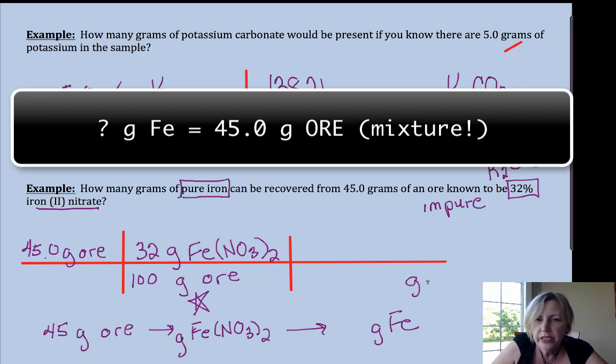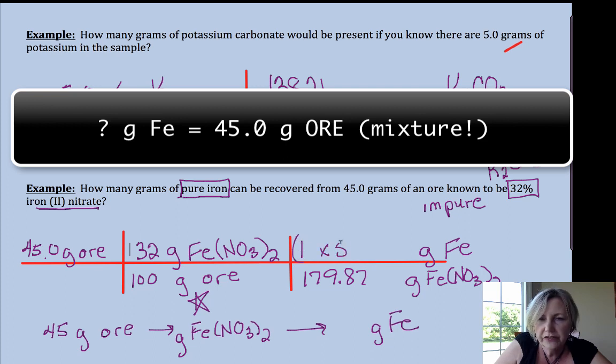Now we want to get rid of the grams of iron(II) nitrate and we want grams of iron, and we're going to use that mass to mass ratio from percent composition: 179.87, and there's one iron each bringing 55.85 grams.